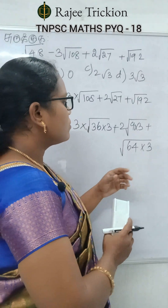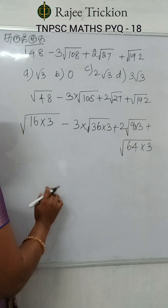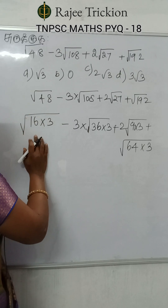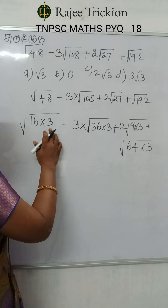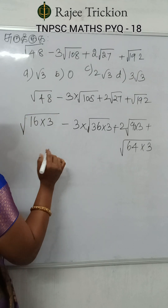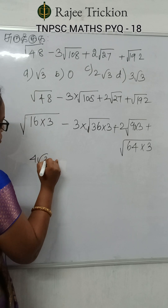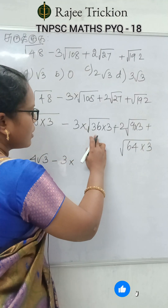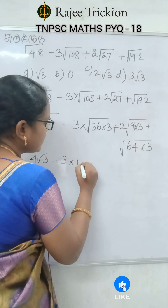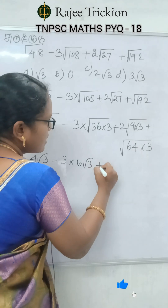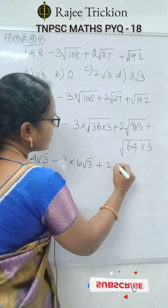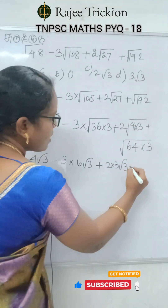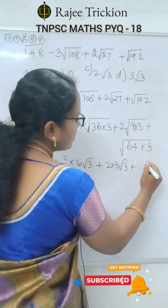64 into root 3 is 192. If you have a square root, 16 square root is 4. So root of 48 gives 4 into root 3. Minus 3 into root of 108: 36 square root is 6, giving 6 into root 3. Plus 2 into root of 27: 9 square root is 3, giving 3 into root 3. Plus root of 192: 64 square root is 8, giving 8 into root 3.